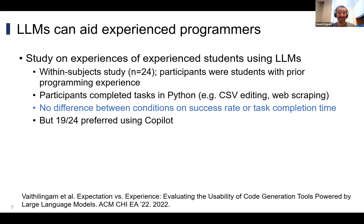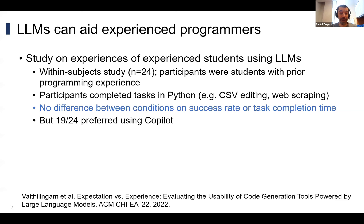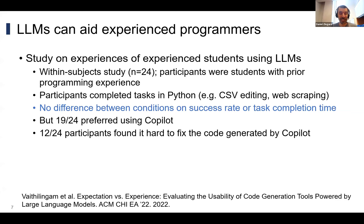In the second paper, a within-subjects study had each participant complete two Python tasks — one without Copilot using IntelliSense, and one with Copilot. There was no difference between conditions on success rate this time. But there are still positive outcomes: the majority of participants preferred using Copilot because it provides a useful starting point. Half the participants did have trouble fixing Copilot code, though — so for teachers in the audience, we still have a lot of skills to teach our students.